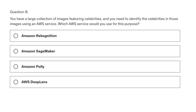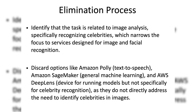You have a large collection of images featuring celebrities and you need to identify the celebrities in those images using an Amazon Web Services service. Which Amazon Web Services service would you use for this purpose? The four options are: Option A, Amazon Rekognition; Option B, Amazon SageMaker; Option C, Amazon Polly; Option D, Amazon Web Services DeepLens.